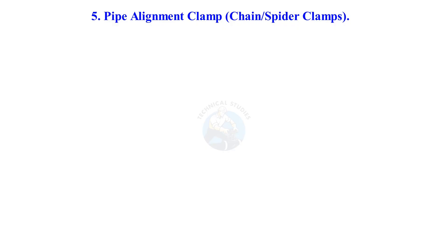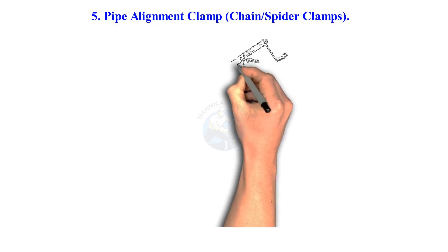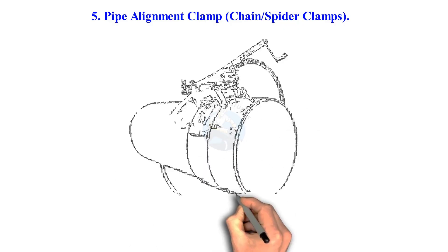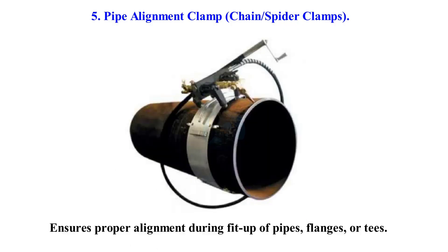Pipe alignment clamp — chain or spider clamps. Ensures proper alignment during fit-up of pipes, flanges or tees.